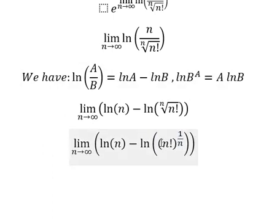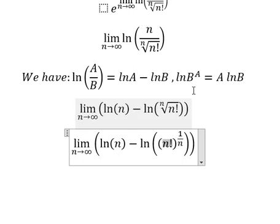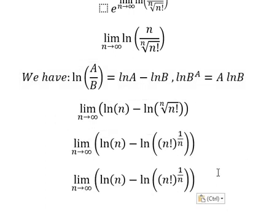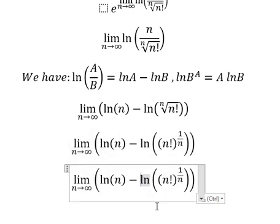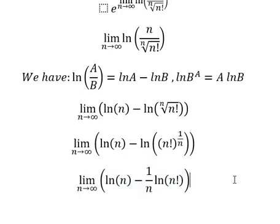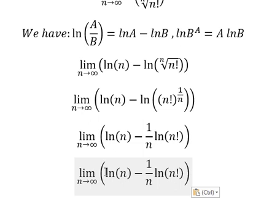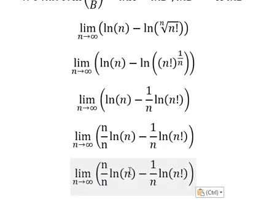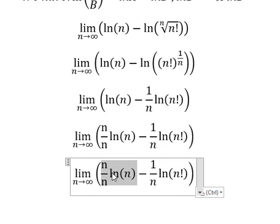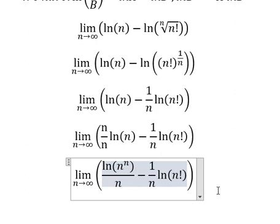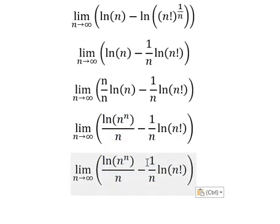Capital B equals n factorial, and capital A equals 1 over n. So I will put 1 over n outside. Next, we can find a common denominator, so we need to multiply by n over n, and n goes inside as ln of n.